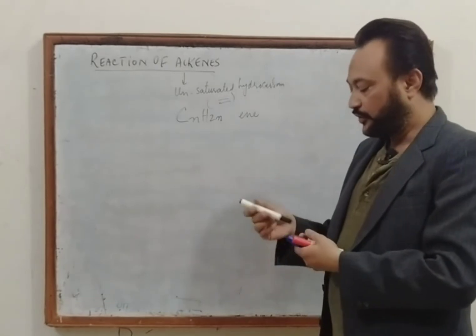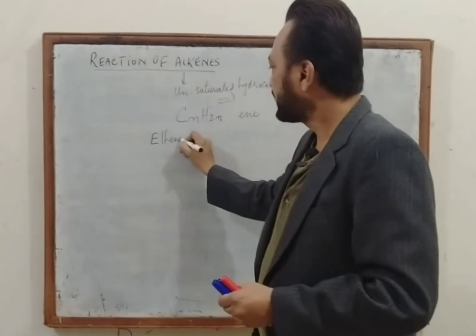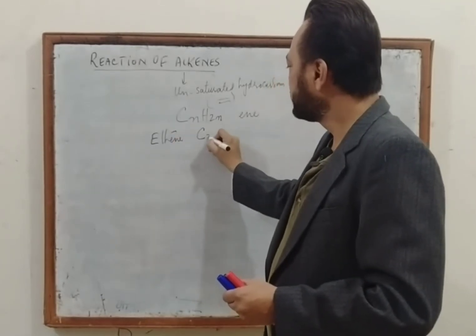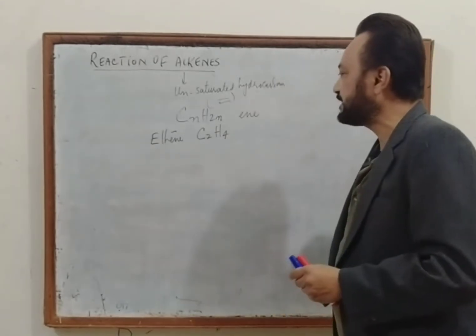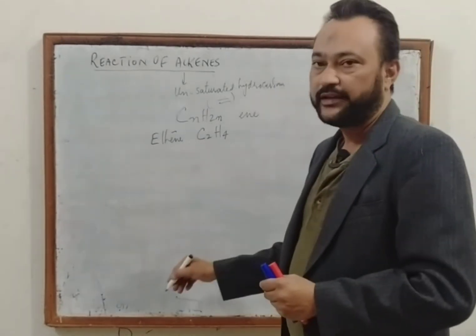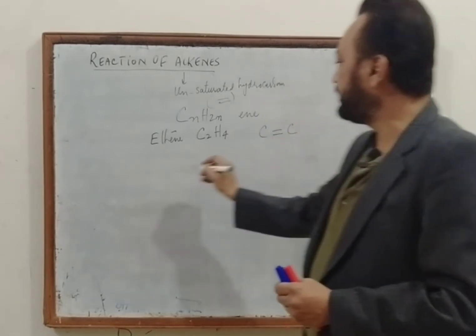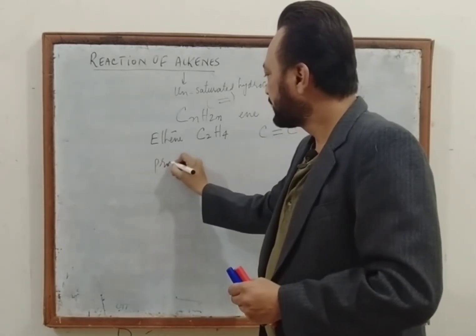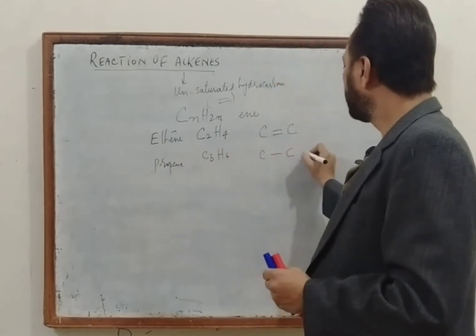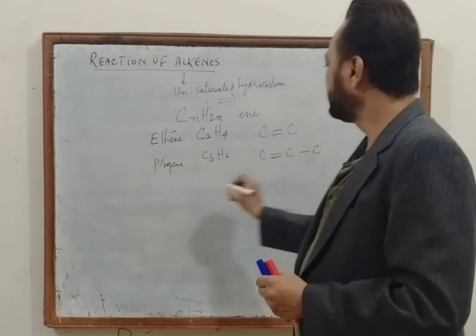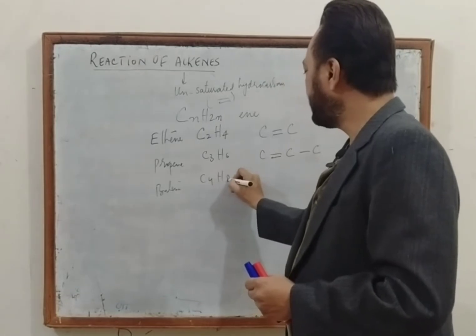The homologous series of alkenes starts with ethene (C₂H₄), then propene (C₃H₆) with a double bond present, and then butene (C₄H₈).